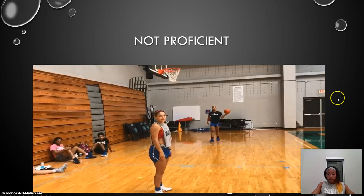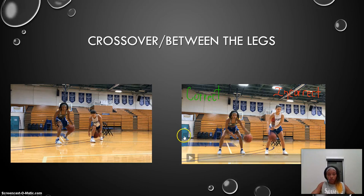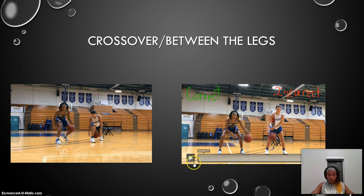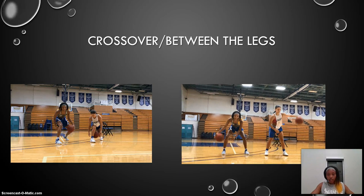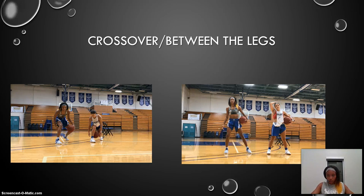So to go through the crossover, we did some ball handling together to show that basically she has to dribble below her knees in a squatting position, just sending the ball back and forward. Because she was dribbling high, the ball is harder to control, and it caused her to dribble the ball off of her foot.